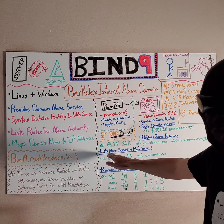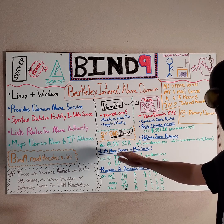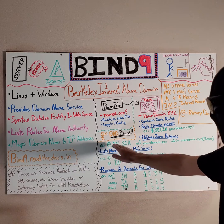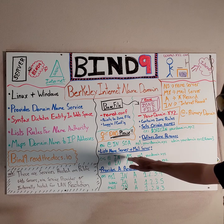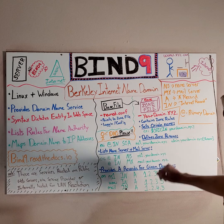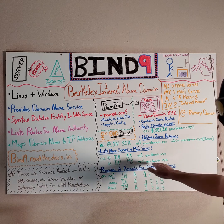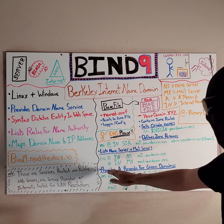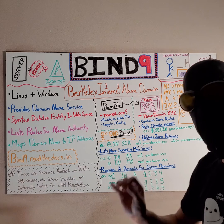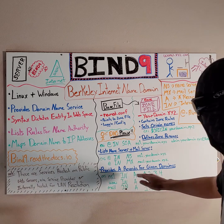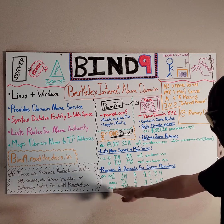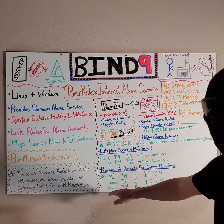The next thing we're going to do inside the zone file is list the name servers and the mail servers. This is done by the same process — we have A in NS for this example, NS being name server, and we list our name server. We do the same thing for our mail server. And then finally, we're going to have a few A records in here that actually map the reference directly to the IP address. In our examples here, we have one for NS1, one for WWW, and one for mail.